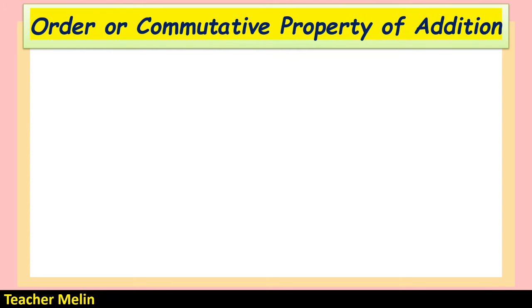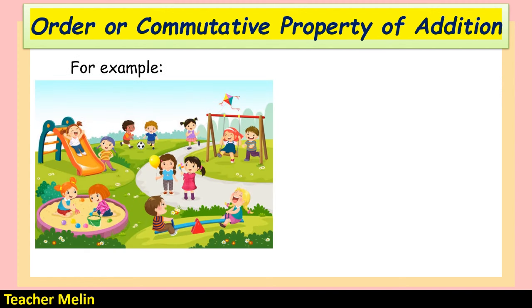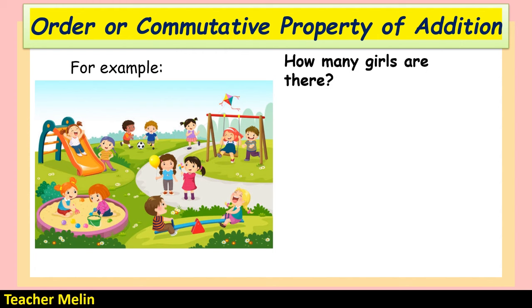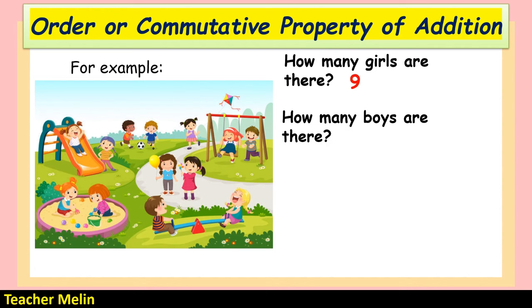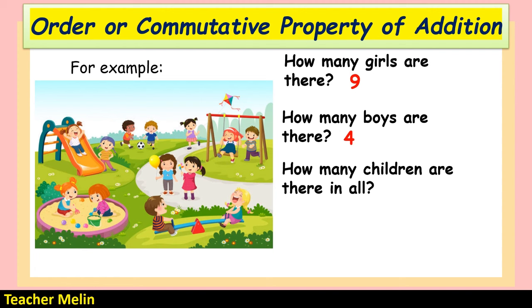Let's proceed to the second property: the order or commutative property of addition. Look at the picture. There are 9 girls and 4 boys. How many children are there in all? The answer is 13.